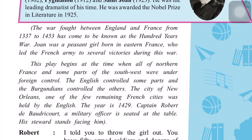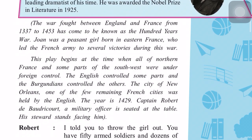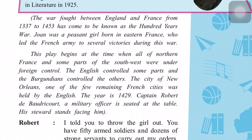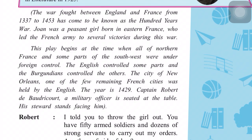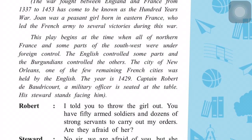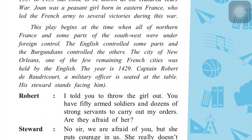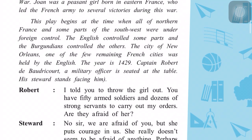As you can see from the years, it was a hundred-year war between England and France. Joan was a peasant girl — a farmer's daughter — born in eastern France, who led the French army to several victories during this war. This play begins at the time when most of northern France and some parts of the southwest were under foreign control. The English controlled some parts and the Burgundians controlled others. The city of Orleans, one of the few remaining French cities, was held by the British. The year is 1429.